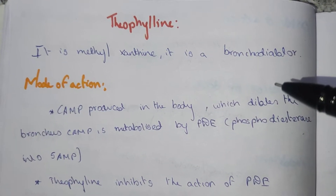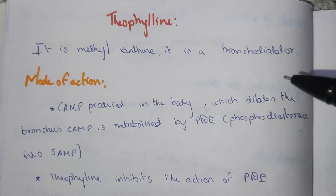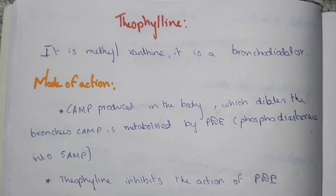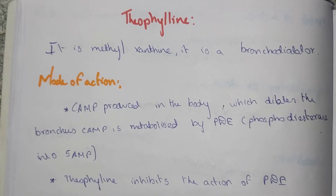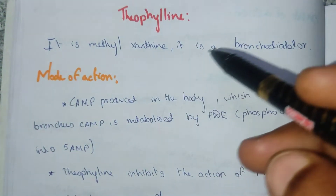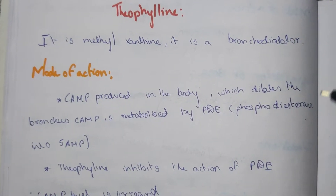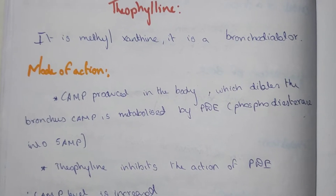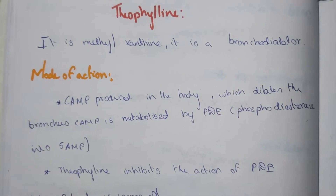Hi everyone, welcome to Medicine Not YouTube channel. In this video we are going to see about theophylline. It is a bronchodilator and it comes under the classification of methylxanthines. Please watch the previous video on salbutamol and bronchial asthma before this video for better understanding.